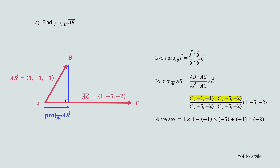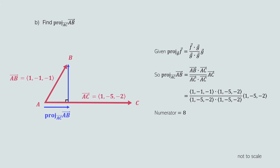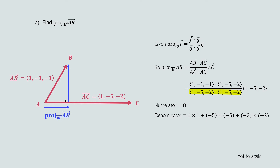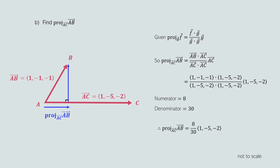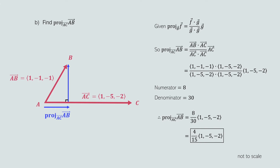The numerator is AB dot AC, which is the dot product of (1, -1, -1) and (1, -5, -2), equalling 1 times 1 plus (-1) times (-5) plus (-1) times (-2), which equals 1 plus 5 plus 2, giving 8. The denominator is AC dot AC, the dot product of (1, -5, -2) and (1, -5, -2), equalling 1 plus 25 plus 4, which equals 30. Therefore the vector projection of AB onto AC equals 8 over 30 times the vector (1, -5, -2), which simplifies to 4 over 15 times the vector (1, -5, -2).